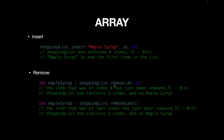Similarly, to remove an item, use the remove(at:) function with the desired index — this also takes O(N) time for the same reason, since all existing indexes need to be updated. If you want to remove from the first or last position, you can use removeFirst() or removeLast(). removeLast() is O(1) because no indexes need to change, while removeFirst() is O(N) because all other elements' indexes must be updated.